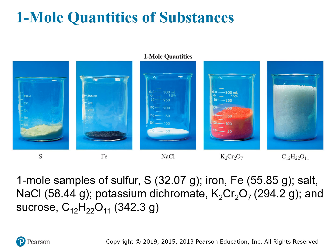Here we can see what a one mole quantity looks like for several different substances: elemental sulfur, iron, sodium chloride (table salt), potassium dichromate, and sucrose (a sugar). They all look very different and have different masses. For sulfur, each atom has a mass of 32.07 AMU, so a mole of sulfur atoms weighs 32.07 grams. For iron, individual atoms weigh 55.85 AMU, so a mole of iron weighs 55.85 grams.